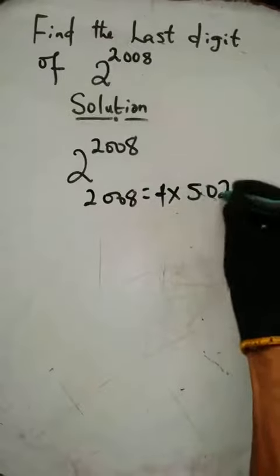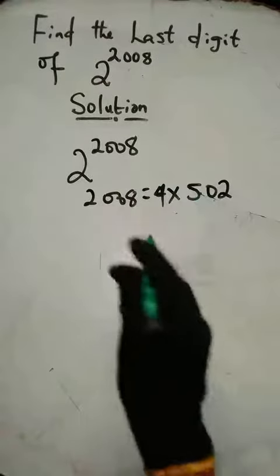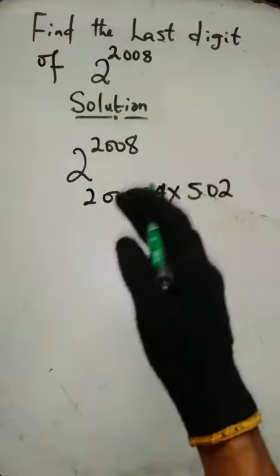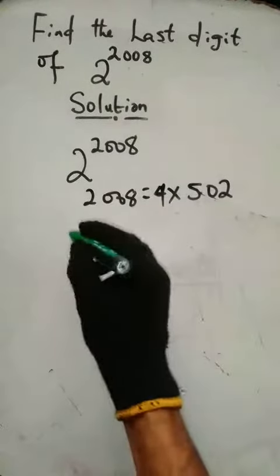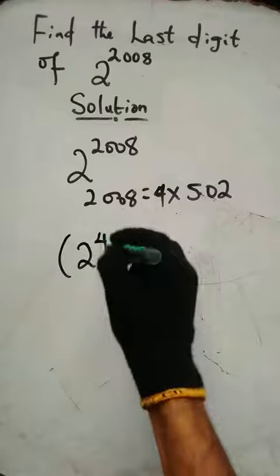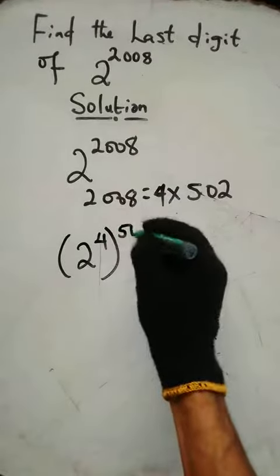...times 502. Now, when looking for the last digit of any number, it's the same as dividing the number by 10. We have 2 raised to the power 4—this is just an application of common indices law.